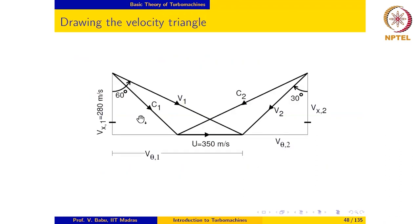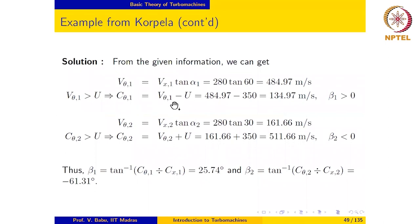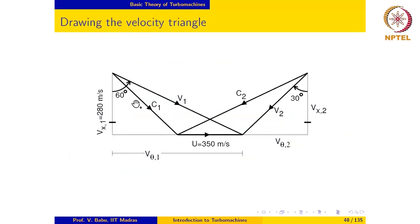Vθ1 has to be evaluated using the given axial velocity. So tan(α1) equals Vθ1 divided by Vx1, and we calculate Vθ1 to be 485 meters per second. Since Vθ1 is greater than U, Cθ1 equals Vθ1 minus U, which comes out to be 135 meters per second. We have already noted that beta1, the blade angle at the inlet, is positive because the relative velocity vector is in the counterclockwise direction from the reference direction.